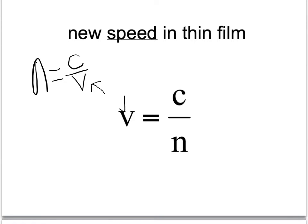We can then solve that equation for v, the speed of light in the material, and we get this. So if you wanted to know the speed of light inside the thin film, you would just take the speed of light in a vacuum and divide it by the film's index of refraction, n.